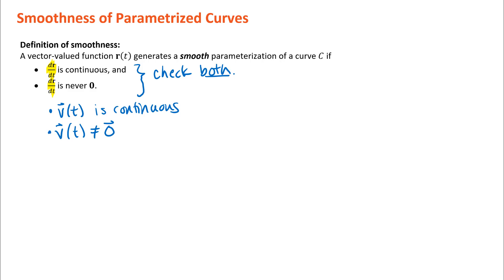This definition really has to do with velocity if you think about it in terms of motion. The velocity vector never being zero would indicate that the object never stops, even instantaneously. And thinking about what it might mean for a velocity function to be non-continuous — that would basically mean an object moving in an erratic way. So it's important to understand that both conditions are about velocity, and you should be able to write down this definition and use it to determine if curves are smooth.